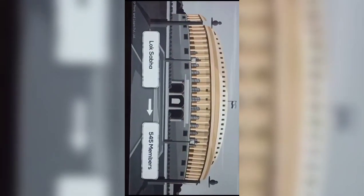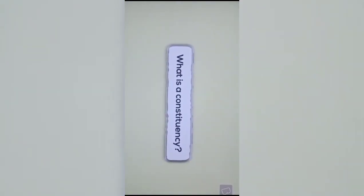The Lok Sabha has 545 members and the Rajya Sabha has 245 members. Members of the Lok Sabha are elected directly by the people of their constituency. All these members represent their own constituency for a period of five years — in other words, they have a tenure of five years.